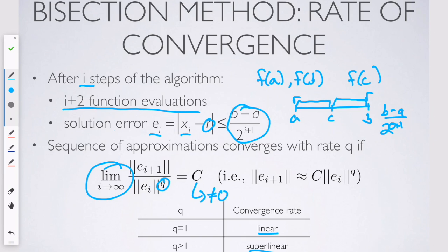It turns out that for the bisection method, the convergence rate is linear. This is something I may ask you to show yourself later on.